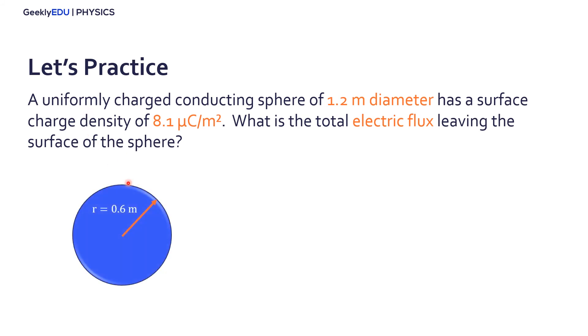So we have our sphere here, the radius of this sphere is 0.6 meters. And we have the surface charge density. So we can start our problem by calculating the area of the surface. It's a sphere, so it's 4 pi r squared. It gives us an area of 4.54 meters squared.